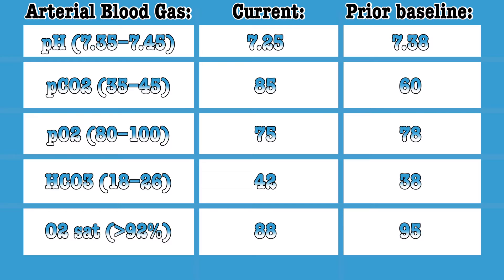Once she is settled, the doctor orders a set of arterial blood gases. Her baseline values are: pH 7.38, PCO2 60, PO2 78, bicarb 38, and oxygen saturation 95%. When she comes to you, her pH is 7.25, her CO2 is now 85, her PO2 is 75, her bicarb is 42, and her O2 sats are 88%. Based on your knowledge of ventilation and perfusion, do we have a problem here, and can we correctly interpret each of these arterial blood gases?